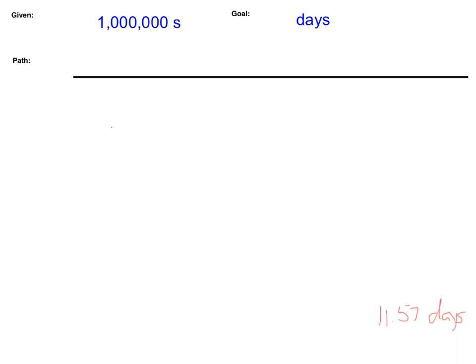We're not going to use our conversion sheet because it doesn't have time. We need to figure out our path. I don't know how many seconds are in a day, but I do know how many seconds are in a minute. I also don't know how many minutes are in a day, but I do know how many minutes are in an hour, and I know how many hours are in a day. So that is going to be my path, and you'll notice this is going to be our longest conversion yet — we need one, two, three different conversions.